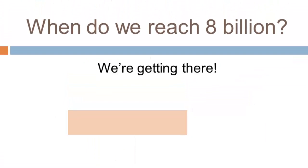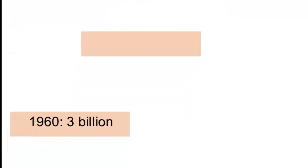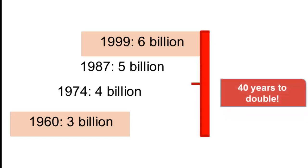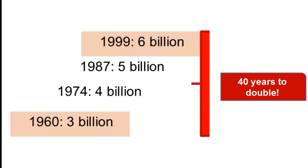In 1960 the global population was three billion. By 1974 it was four billion; by 1987, five billion; by 1999, six billion. In just 40 years — from when I was almost born to when I was finishing my PhD — the population of the planet doubled again from three billion to six billion.